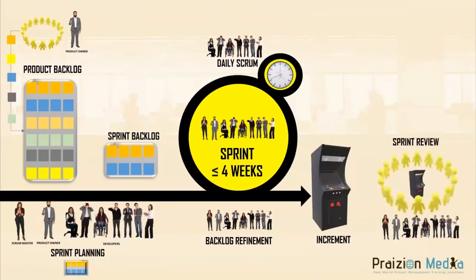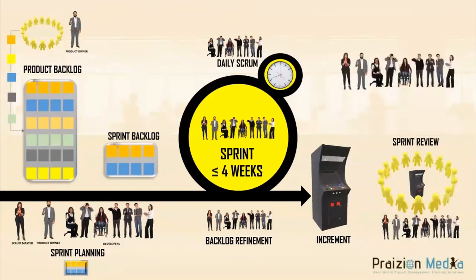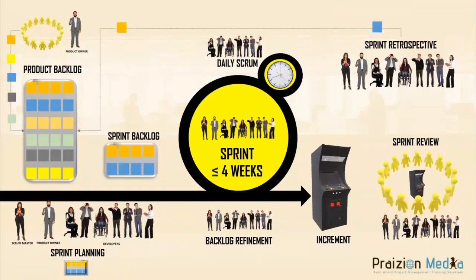The next event is the sprint review, where customers and stakeholders give us feedback on what we have created. From this great feedback, we know what to do in subsequent sprints. The next event is the sprint retrospective — this is where we look at what went well, what didn't go so well, what can we improve on right now, and what can we improve on in the next sprint. We put improvements into the backlog with a mindset of getting them done as quickly as possible.